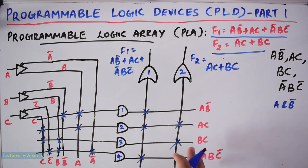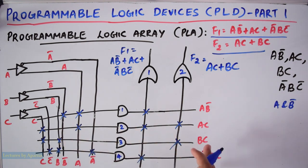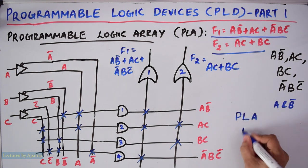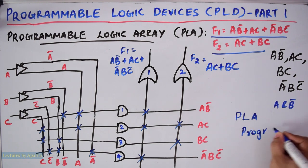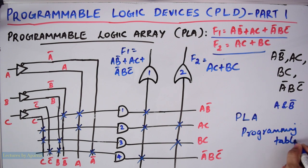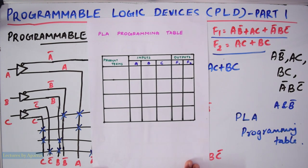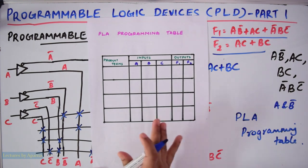Here we have programmed both the AND array and the OR array. So to do this programming, it is very important to make the PLA programming table. We will see how we can write the PLA programming table. It consists of three sections: product terms, inputs, and outputs.